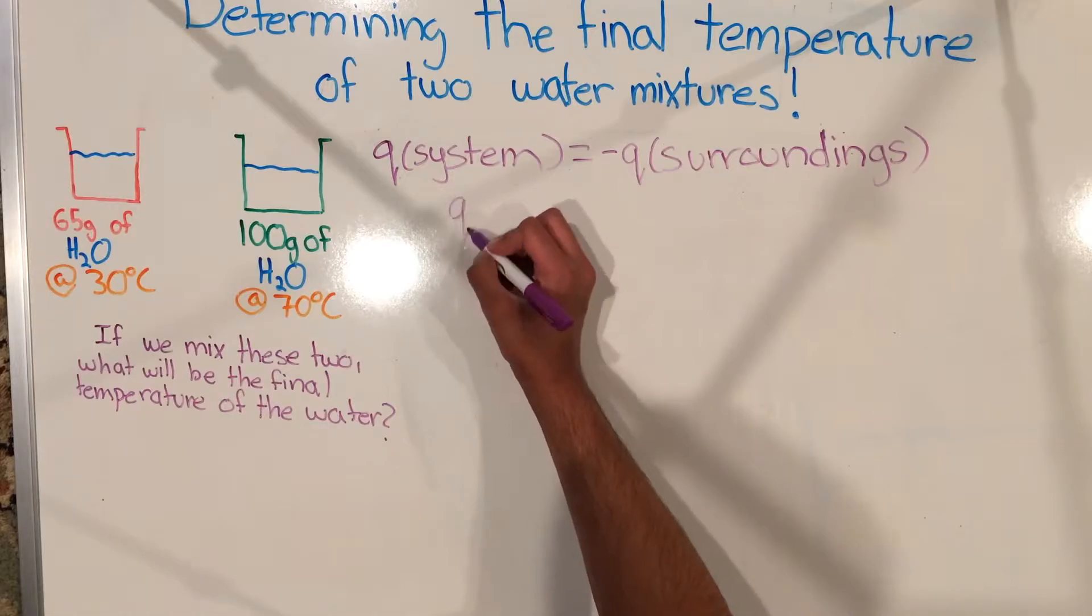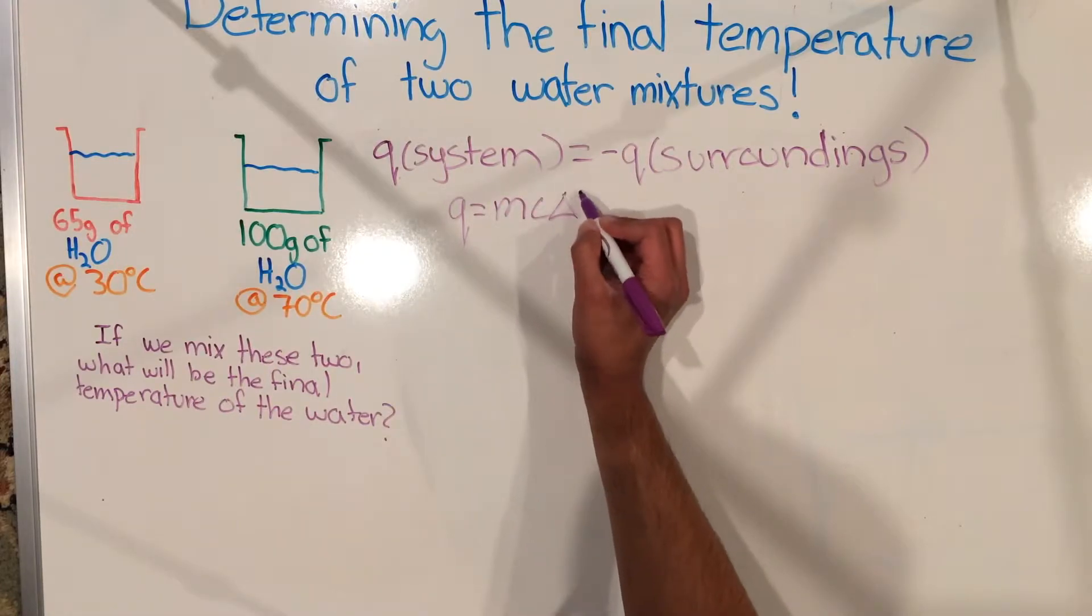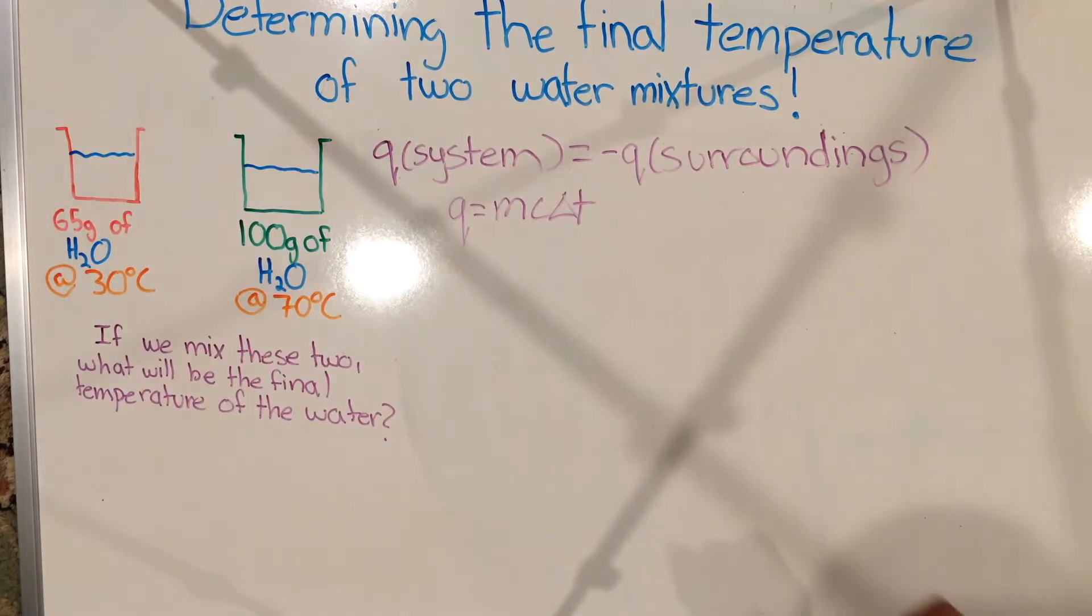The second major thermodynamic concept we are going to use is the heat equation, which is Q equals MC times the change in temperature. Where Q equals the heat, mass equals the mass of the substance in question, C is the specific heat capacity of the substance in question, and the change in temperature is the final temperature minus the initial temperature.